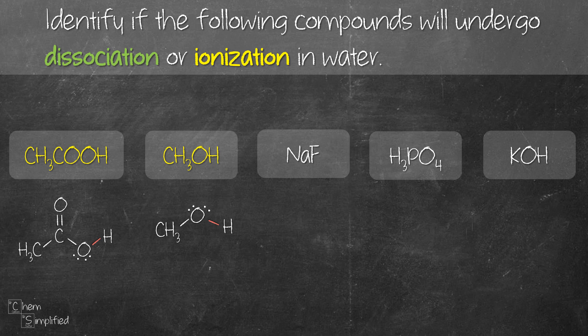Next is NaF. NaF consists of a metal, which is sodium Na, and a non-metal, which is fluorine. Therefore, it makes NaF an ionic compound. That means NaF will dissociate into its existing ions of Na+ and F-.